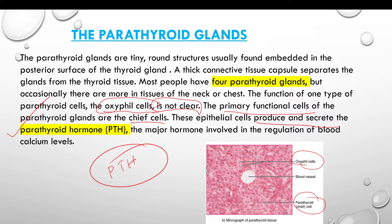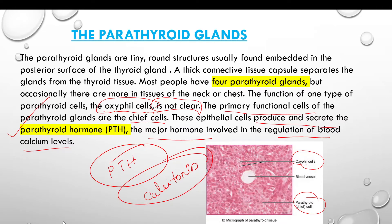PTH is the major hormone for regulation of blood calcium levels. The related hormone is calcitonin, which also regulates calcium levels.